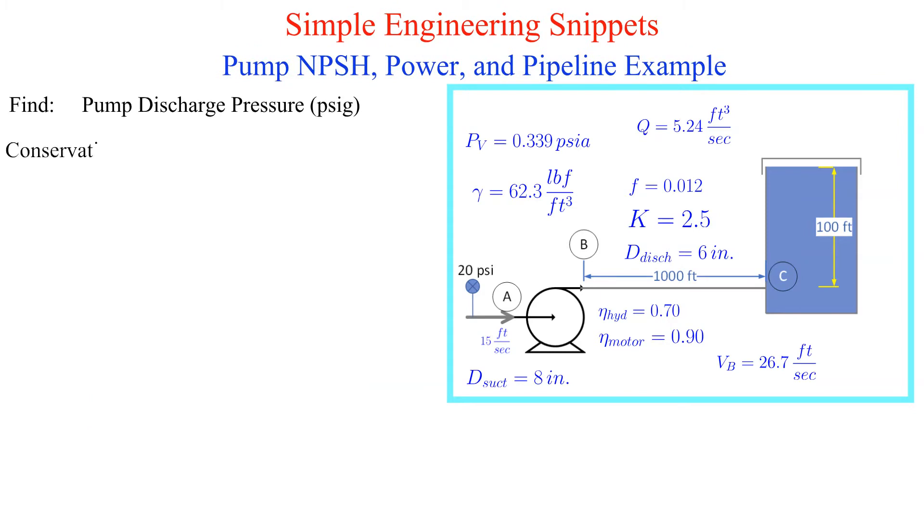Now let's apply conservation of energy from the pump discharge to the large tank. First we'll make some simplifications. We set the datum to the elevation of the discharge of the pump so the elevations at points Bravo and Charlie are zero. The tank is large so the velocity at point Charlie is zero. Finally we chose point Charlie at a depth of 100 feet so the pressure head at point Charlie is 100 feet.